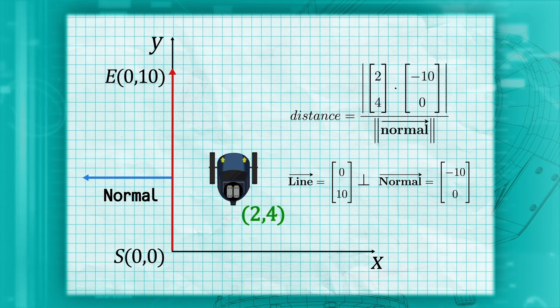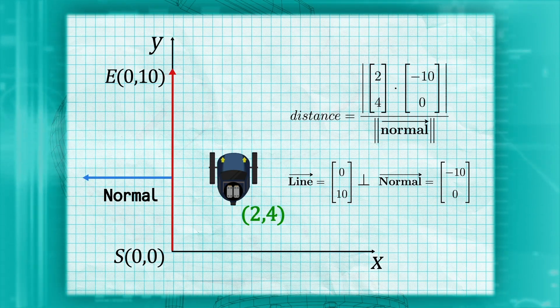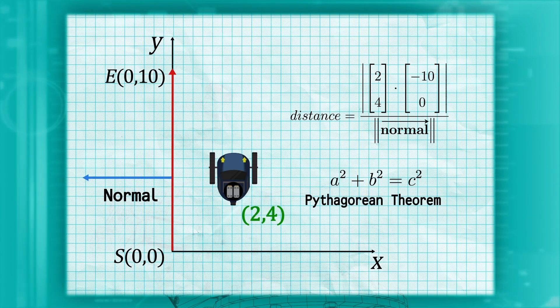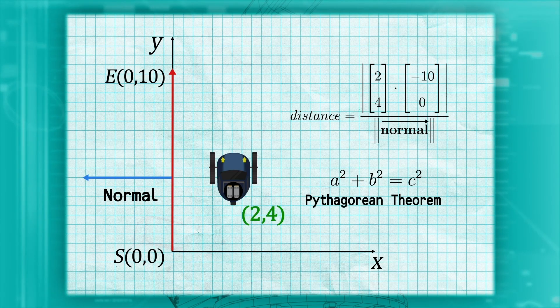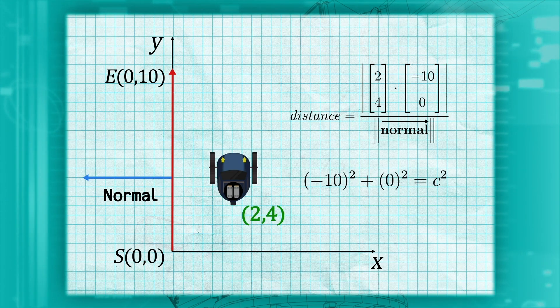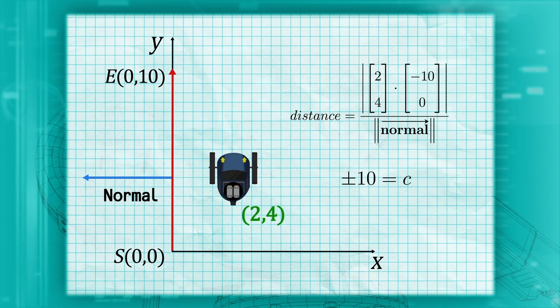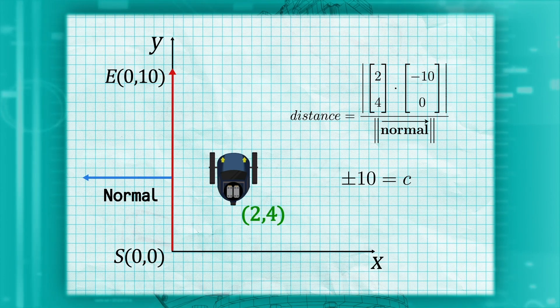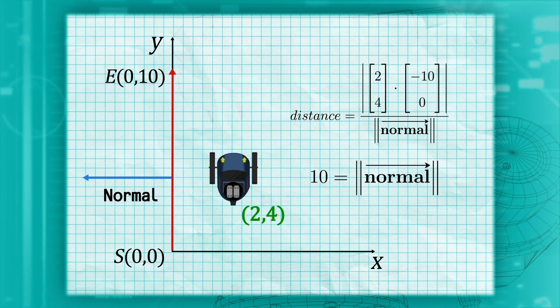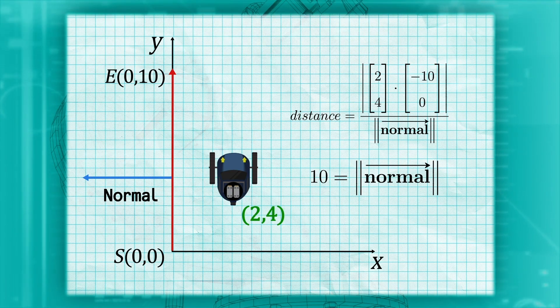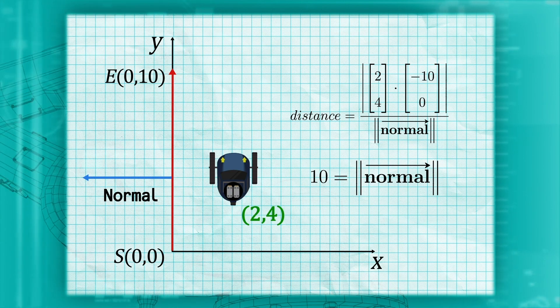We will also need the length or magnitude of the normal line. We can use the Pythagorean theorem to determine this. Using the x and y components of the vector for a and b, we get plus or minus 10 as our answer. Since length is positive, we can discard the minus 10 possible root and arrive at our final answer, 10. We use the double vertical bars to mean the length of a vector.